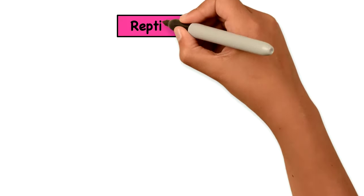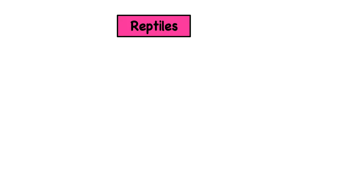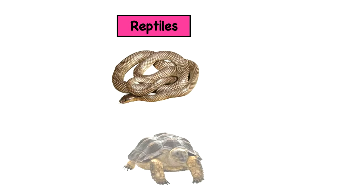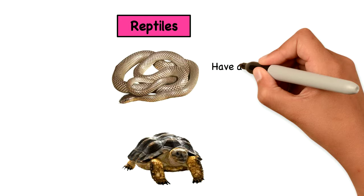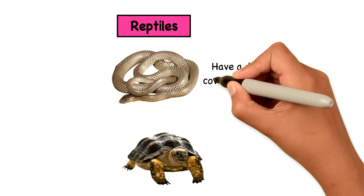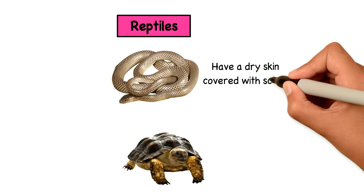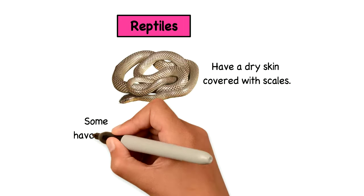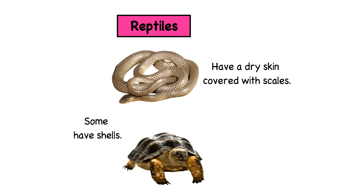And now the last group, the reptiles. Which are their characteristics? Well, as you can see, they have a dry skin covered with scales. And some, like the turtle, have shells.